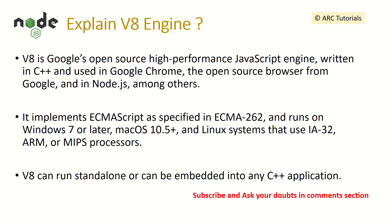Explain the V8 engine. V8 is Google's open-source, high-performance JavaScript engine, written in C++ and used in Google Chrome. It implements ECMA standards and runs on Windows 7 or later, Mac, and Linux systems. V8 can run standalone or can be embedded into any C++ application.